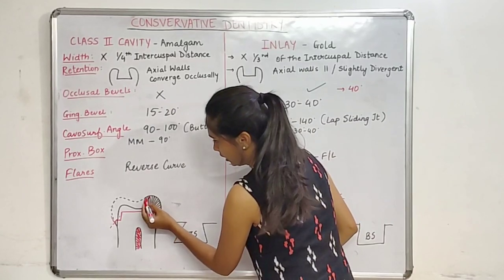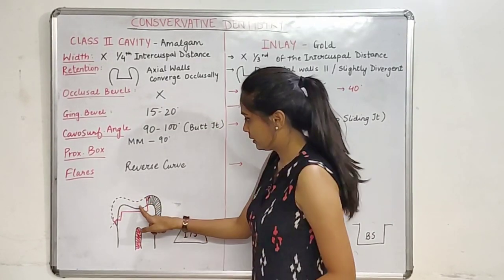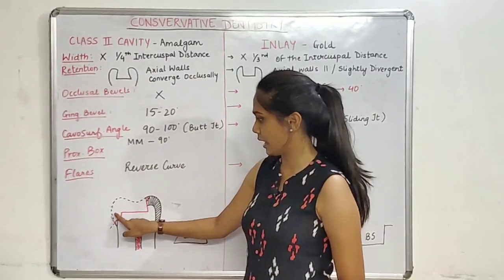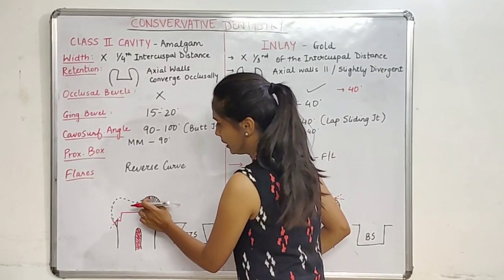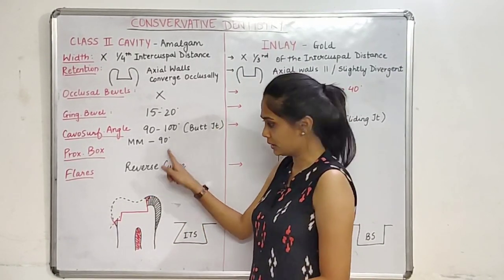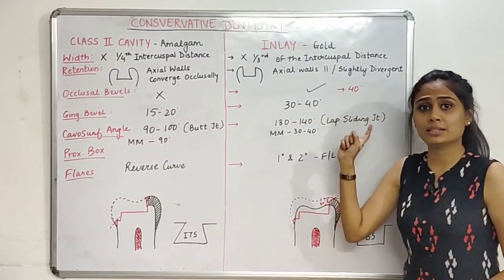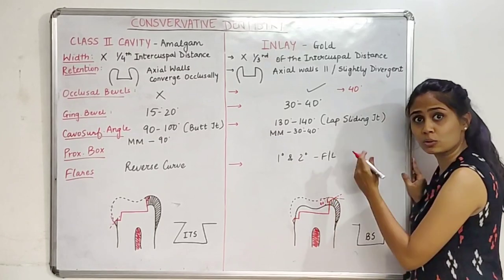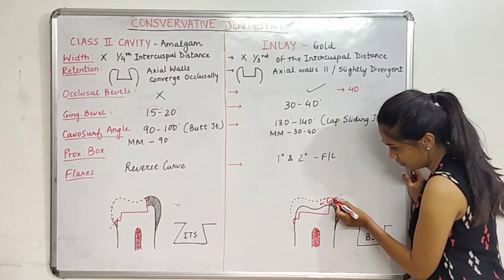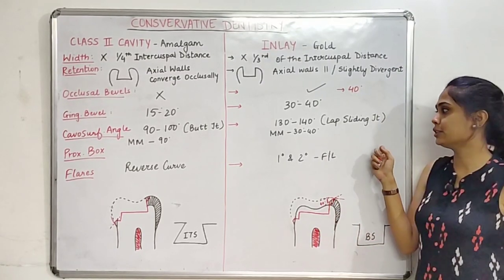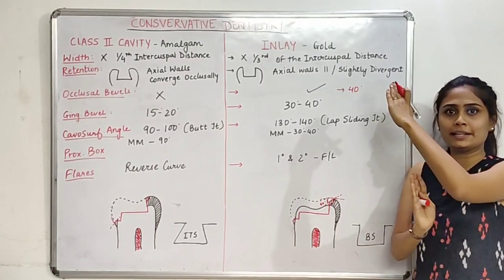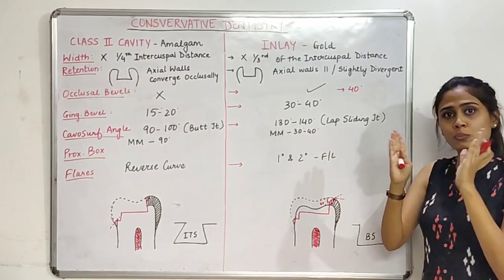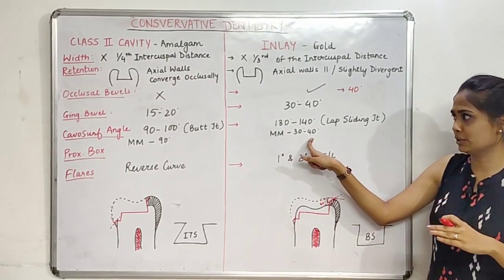In the inlay cavity, the cavo-surface angle is 130 to 140 degrees because we have given an occlusal bevel, which changes this angle. This is known as a lap sliding joint — it slides like a joint rather than forming a right angle. The metal margin at the inner occlusal bevel area will be approximately 30 to 40 degrees, matching our occlusal bevel dimensions.